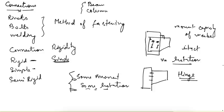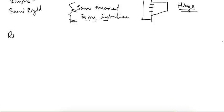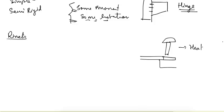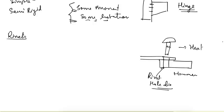Now let's look at rivets. Rivets are metal pieces — we form a rivet head, heat the rivet, and insert it for the joint (lap joint, butt joint, etc.). We insert the rivet and hammer it. The initial rivet diameter is less than the hole diameter, but when hammered, the metal expands and completely fills the hole. The design is similar to bolts, and in IS 800 not much is discussed about rivets.